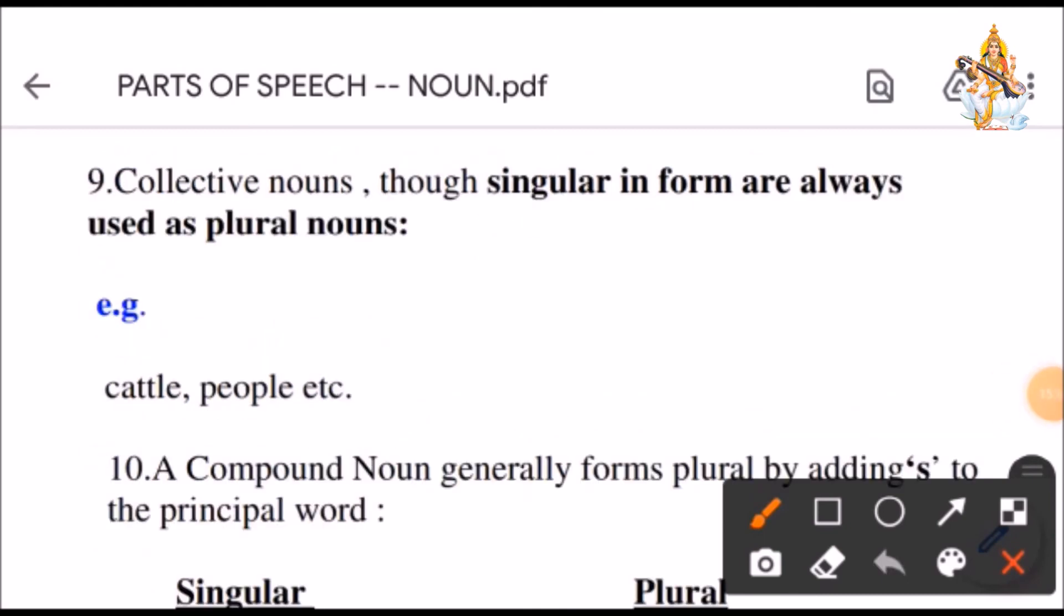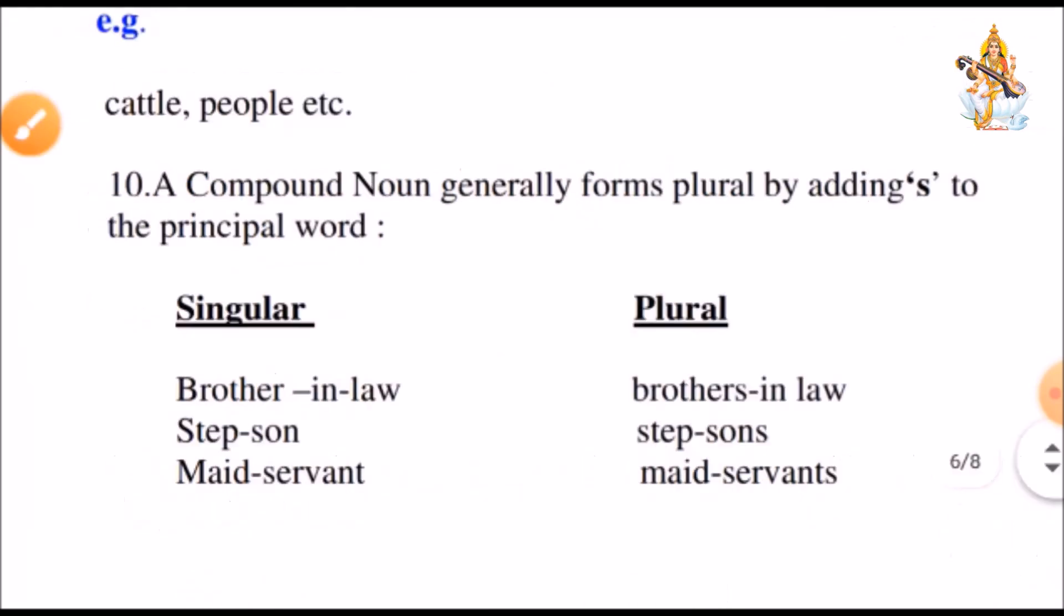Collective nouns though singular in form are always used as plural nouns. Like cattle, people. They are plural.